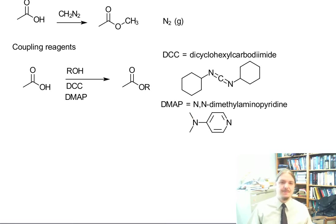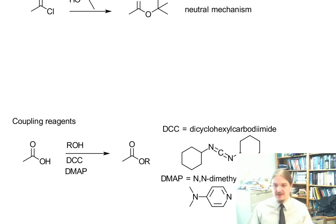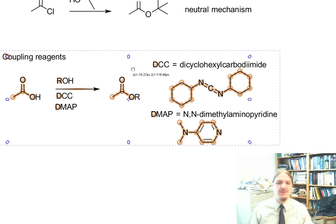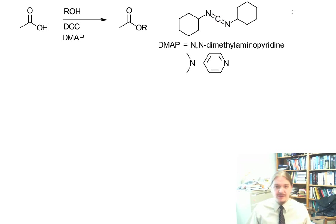This is actually a pretty cool reaction and I want to go through the mechanism. I'm going to abbreviate the cyclohexyl groups because there are other kinds of carbodiimides, so these are going to become R's. First off, dimethylaminopyridine is a base and it mediates deprotonation of the carboxylic acid to make a carboxylate anion.